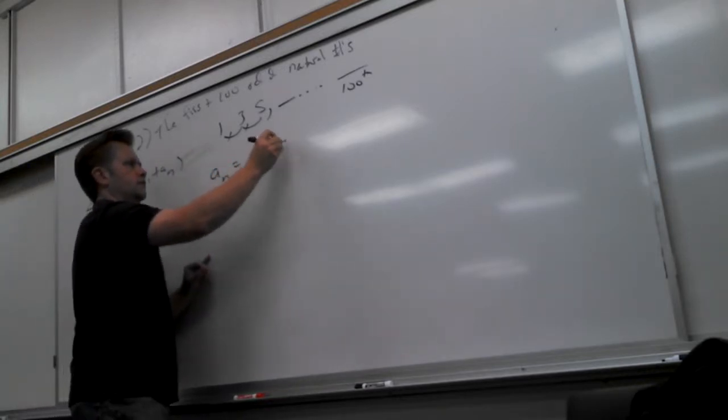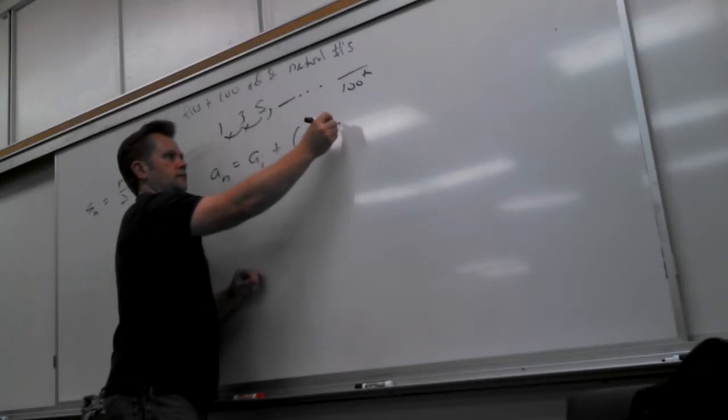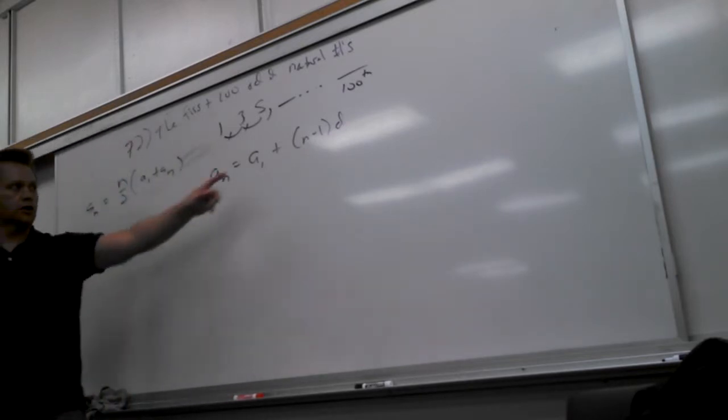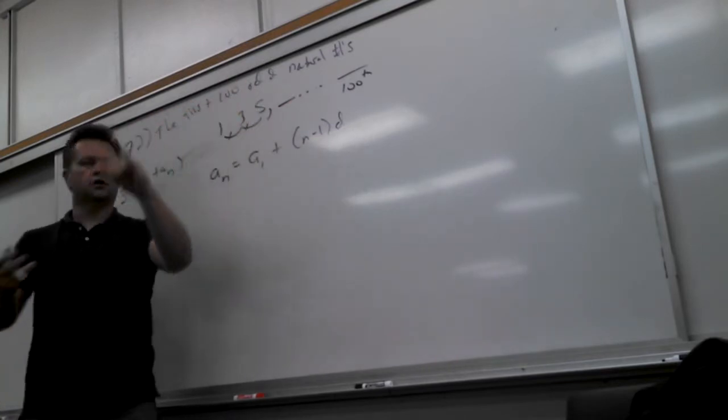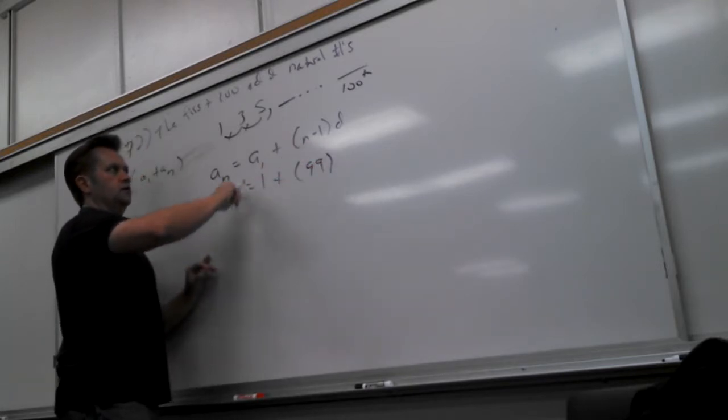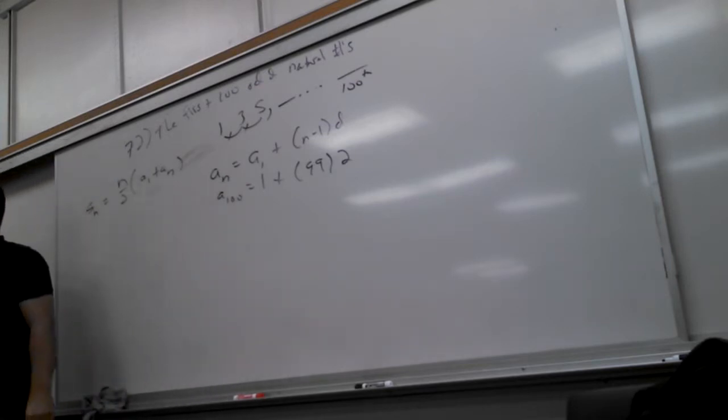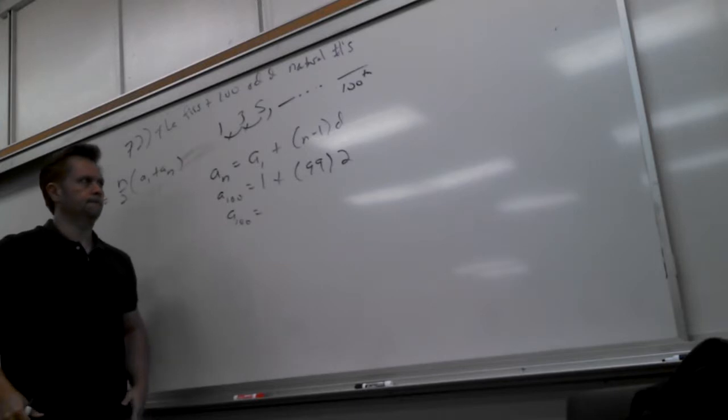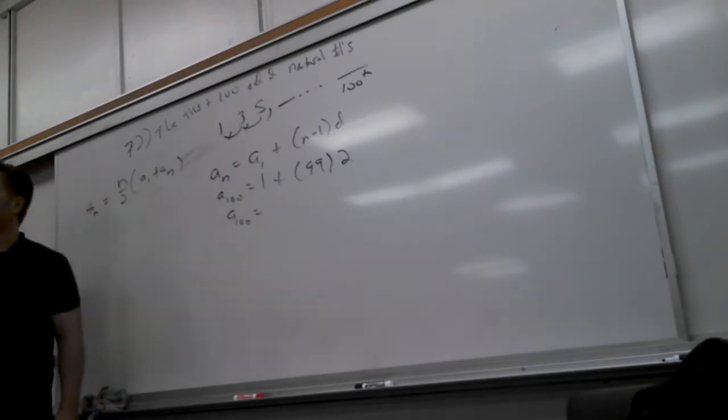So that would mean that the nth term, what's the formula for that? A1 plus, a_n minus 1, or n minus 1 times d. So I start here, and I go this many steps. So then to figure out A100, you would say, I start at 1 and I go 99 times 2. So then, what's the 100th term going to be? 199. Cool. So that's the 100th odd natural number.